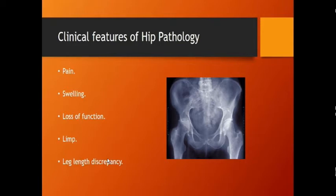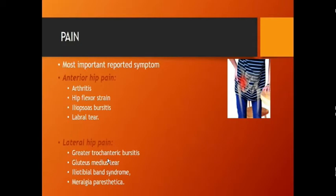Anterior hip pain can suggest arthritis, labral tear, or iliopsoas bursitis. Lateral hip pain suggests greater trochanter bursitis or gluteus medius tear. We can localize the pain to three regions: anterior, lateral, and posterior. To extract information about pain, you take history in the standard way — onset, character: sharp pain may suggest muscle tear or fracture; dull pain suggests osteoarthritis or rheumatoid arthritis; throbbing pain is found in infections; radiating pain in sciatica or hernia.